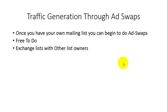What you're basically doing here is exchanging lists with other list owners. In other words, you're going to find a partner that is going to mail an opt-in offer to their list, and you're going to mail an opt-in offer for them to your list. What you really need to do is find a partner with a list — that is the genesis, the basis for doing an ad swap.